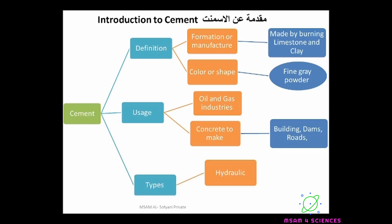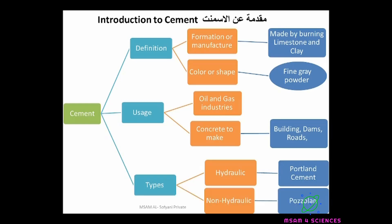Types of cement. Hydraulic cement — example: Portland cement. Non-hydraulic cement — example: Bozola. The difference between the two types is that hydraulic cement can develop strength and remain strong even under water, but non-hydraulic cement can develop strength but cannot remain strong under water.